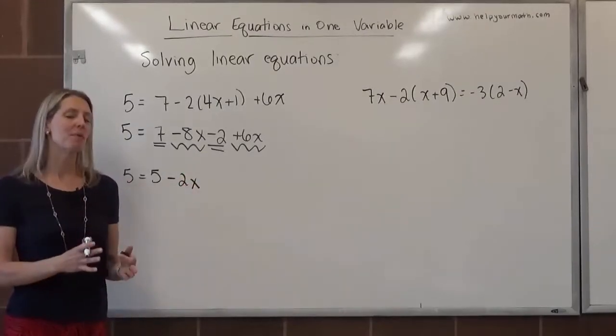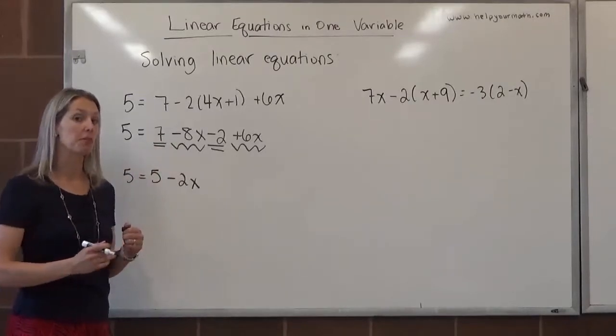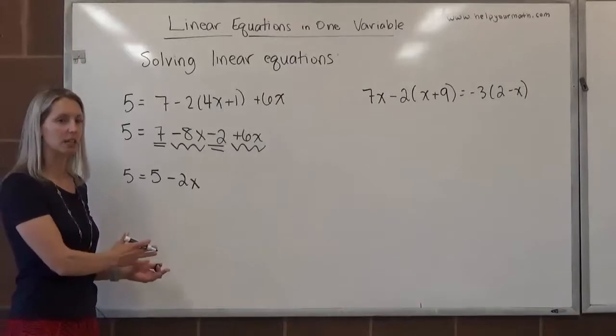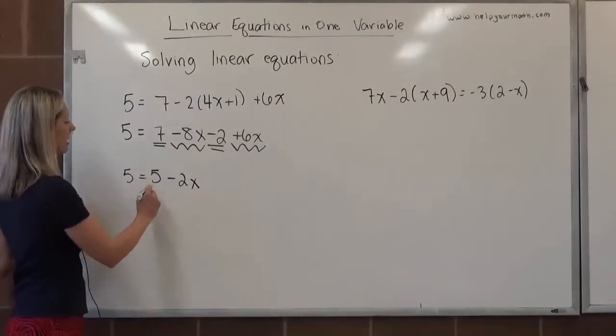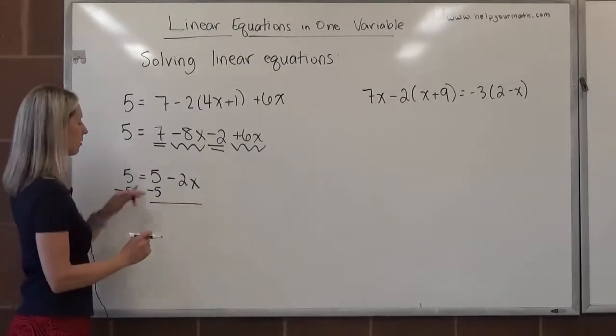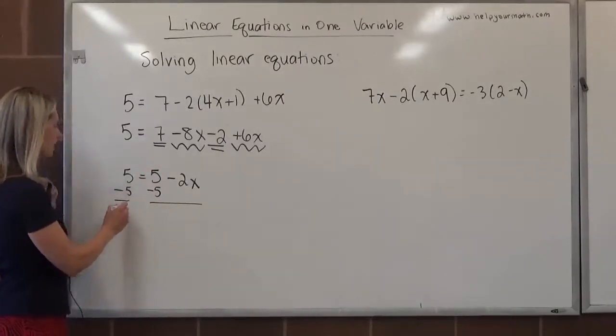If you're uncomfortable with the variable being on the right hand side, you can flip the entire equation around using the commutative property of equality. If it doesn't bother you, we'll just leave it like this. We want to get x by itself, so first I'm going to take away 5 from both sides. This 5 was positive, there was no sign in front of it, so we would take away to undo that plus 5. 5 minus 5 is 0.